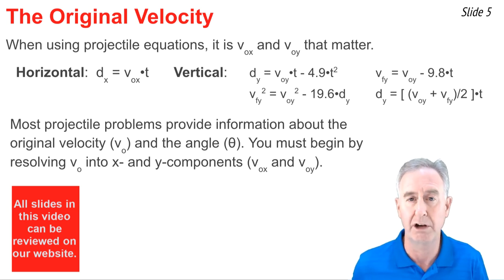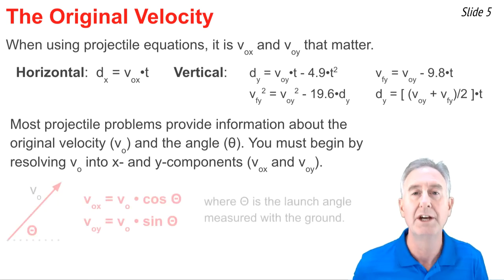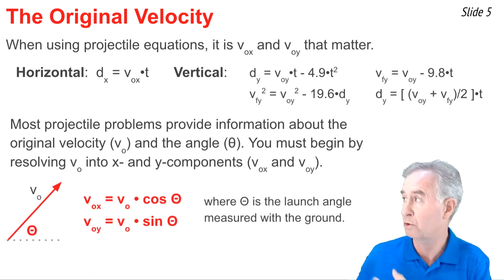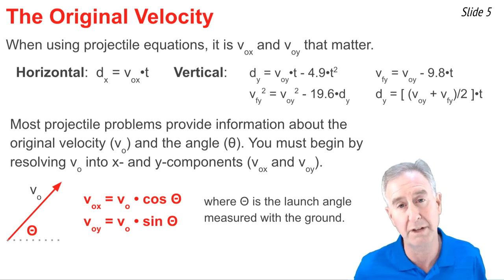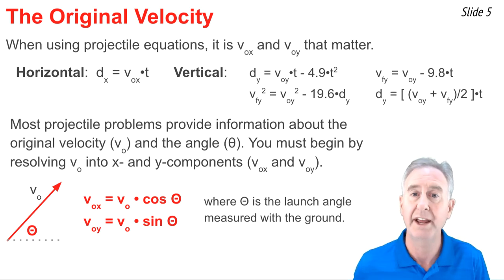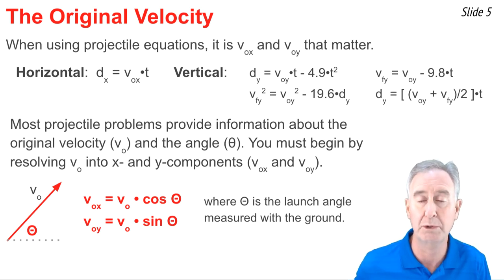Your first step involves taking that original velocity and resolving it into x and y components. Doing so demands that you use trigonometric functions such as these. The Vox is the original velocity times the cosine of theta, and the Voy is the original velocity times the sine of theta. Here theta stands for the angle between the original velocity vector and the horizontal.